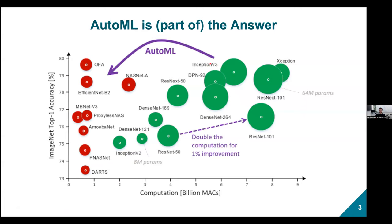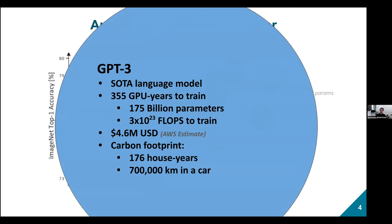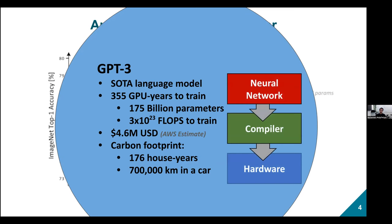One clear solution is AutoML. Looking at models doing image classification on ImageNet, automated design techniques for neural networks can bring them back into the sub-1-billion MAC regime, making them far more efficient. However, for large language models like GPT-3 — which has 175 billion parameters, requires 10^23 FLOPs just to train, costs around $4.6 million USD, and has a huge carbon footprint — even current AutoML techniques are insufficient. We really need to co-design the full stack from neural networks all the way down to hardware.